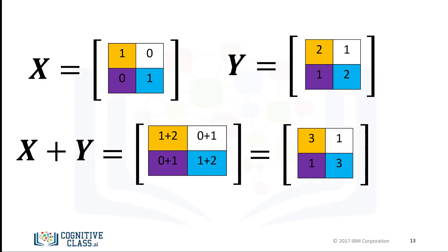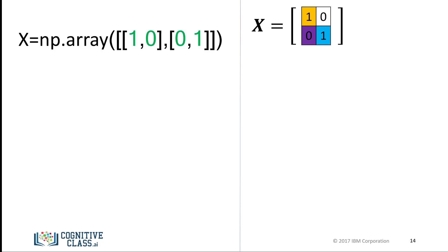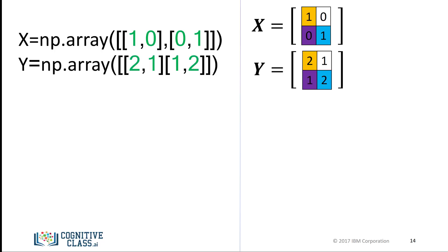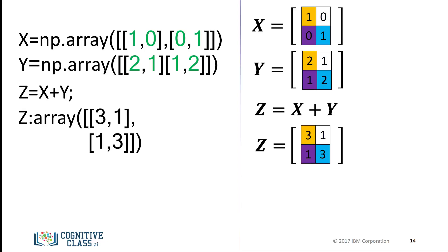Each element in this new matrix is the sum of the corresponding elements in X and Y. To add two arrays in NumPy, we define the array X, then we define the second array Y, and we add the arrays. The result is identical to matrix addition.